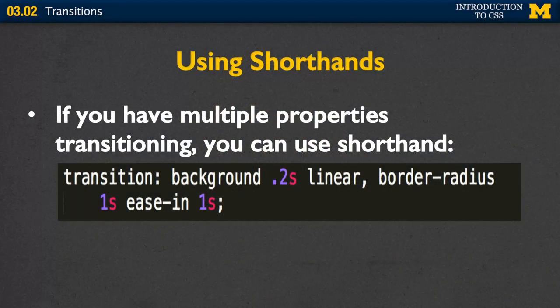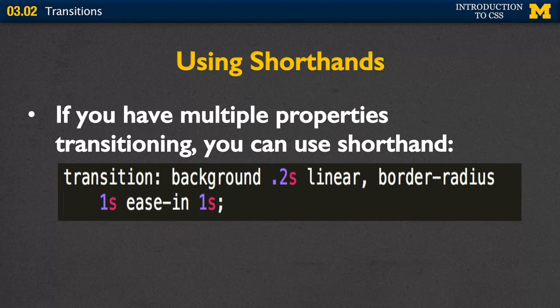It is possible and very common to use shorthand when writing transitions. Instead of writing out transition-duration, properties, and so on separately, you can put it all in one line. For example: change the background, taking 0.2 seconds, with a linear transition. Or change the border radius, specifying the duration, type of transition, and delay. So when you look at other people's code, don't be confused if it doesn't look like the long form — they've probably been using the shortcuts.